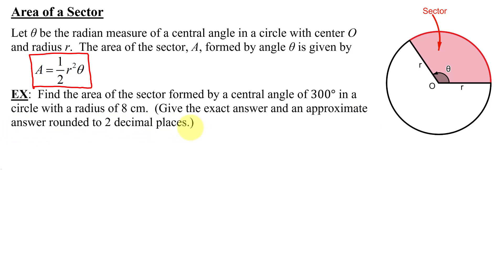So all I have to do in this problem is find the area of the sector, that's A, and was I given R and theta? We were told the radius was 8 centimeters, and we were given a central angle of 300 degrees.